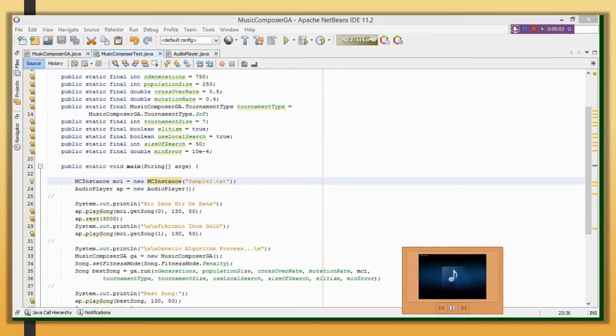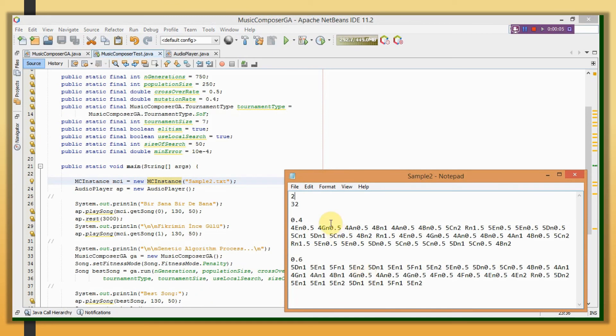Finally, let's run the program with the third instance. It contains two songs, and desired similarity rates are 0.4 and 0.6. These two songs will be played first. Then, produced best song will be played, as usual.